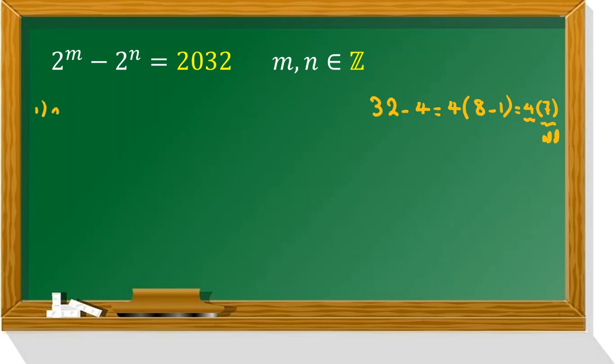So let's first consider if m and n are greater than or equal to 0. Then we know m is greater than n because it is positive. So if you factor out 2 to the n, it will be 2 to the n times (2 to the m minus n minus 1) equals 2032. So we should see what 2032 is: which power of 2 times odd number.